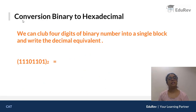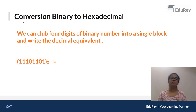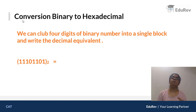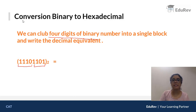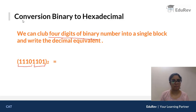Now let's understand how to convert binary to hexadecimal. For octal we formed groups of 3 digits; for hexadecimal we form blocks of 4 digits — that's the only difference. Starting from the right, we form blocks of four. The first block and the second block cover the entire number. The rest of the process remains the same.